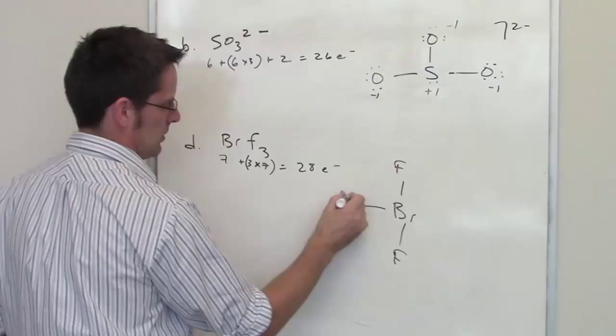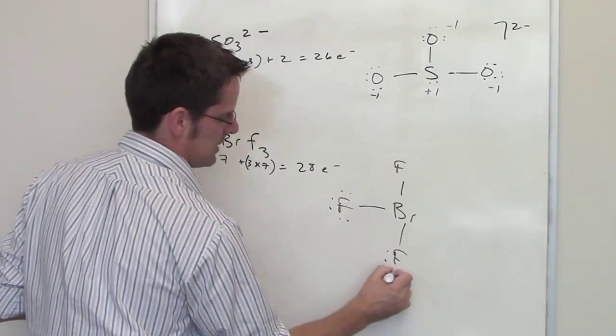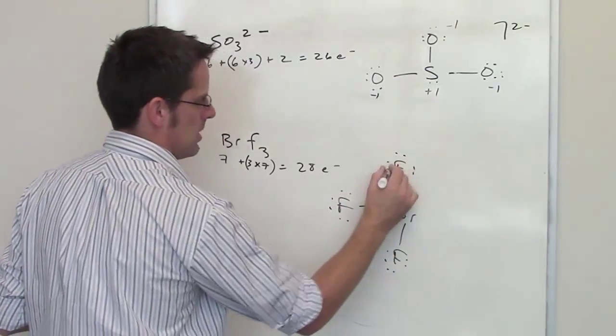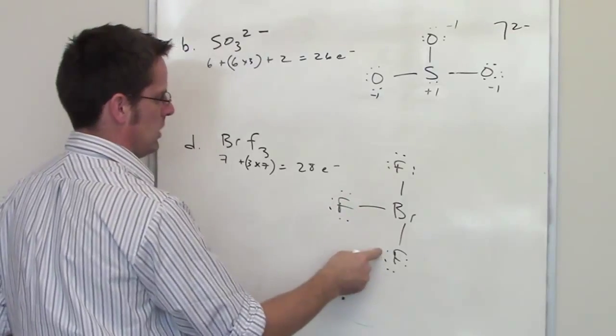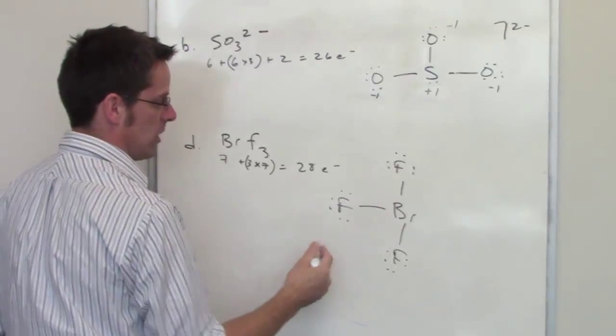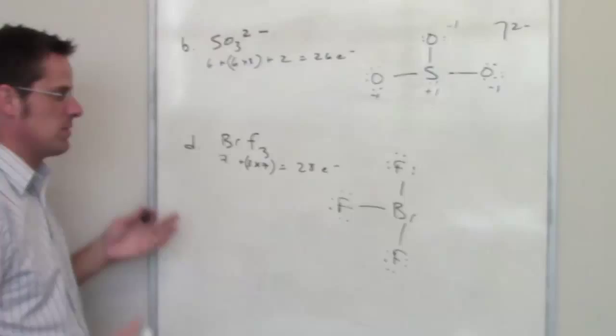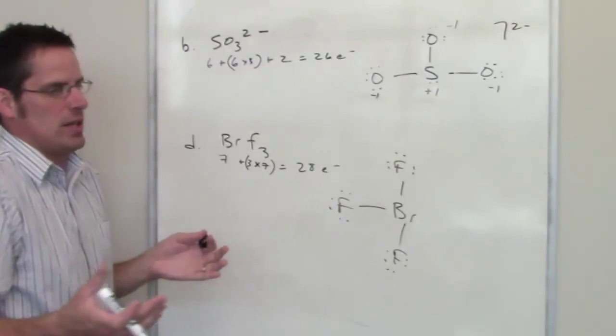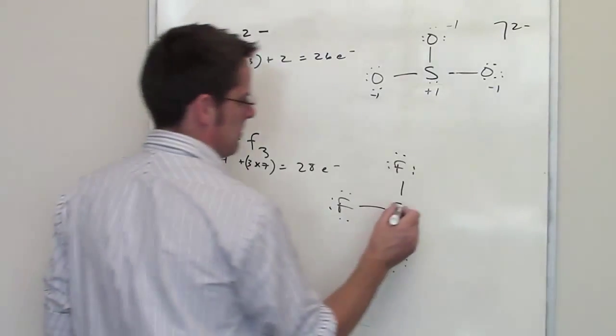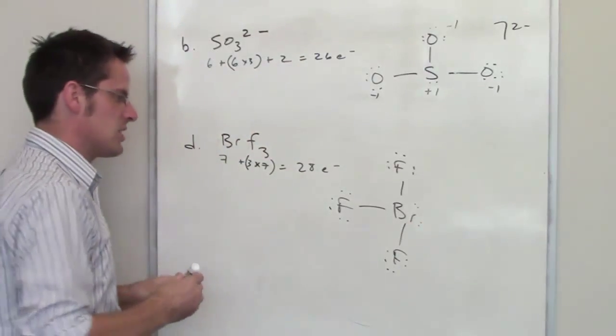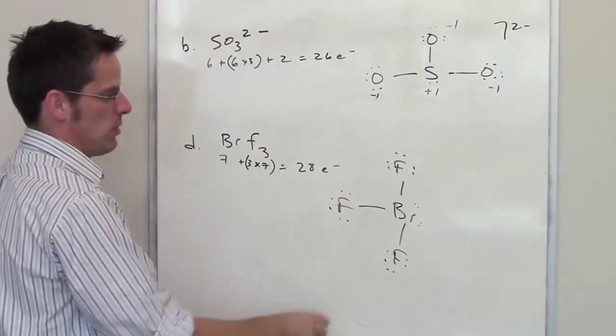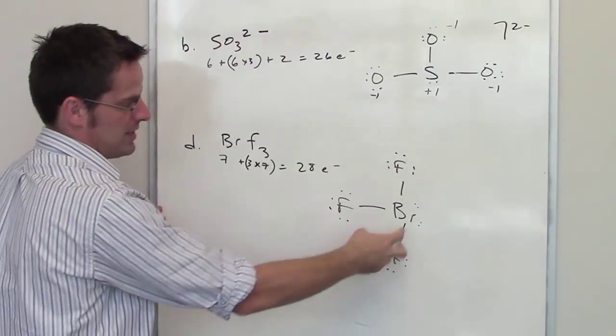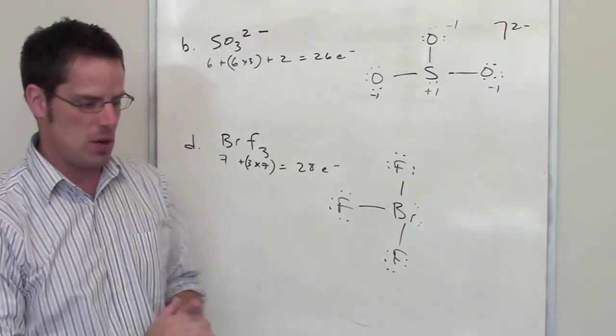Now I'm going to lay down a bunch of electrons here to try and satisfy everybody's octet. I've got eight electrons times three is 24 electrons. I've got four more electrons that I have to put somewhere. Where do those extra electrons go? They have to go on the bromine. So I'm going to put two electrons here and two electrons here. That is a central atom that has five things around it. It has three fluorines and two sets of lone pairs.